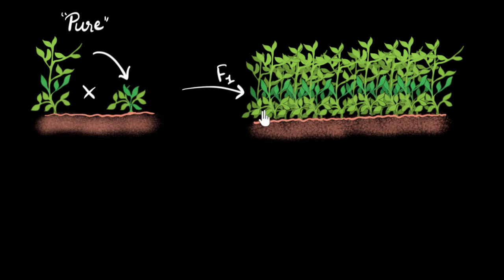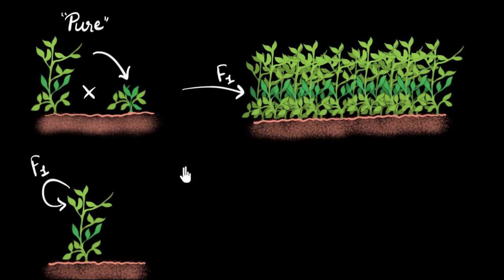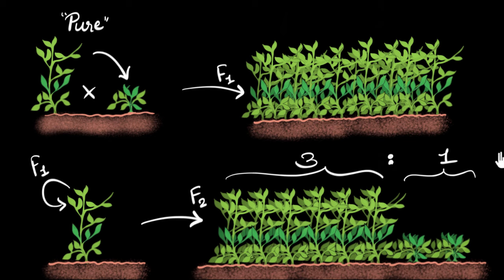Mendel wanted to know whether these tall F1 plants were also pure. So he took these F1 generation tall plants and self-fertilized them to see what he would get. And what he got was again a surprise — he got both tall and short plants in a specific ratio, roughly three to one. The short trait seemed to have skipped one generation and then appeared back in the next. What's going on? How do you explain all of this?